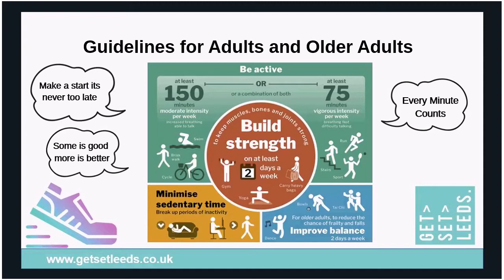The most commonly used infographic to explain the guidelines for adults and older adults shows 150 minutes of moderate intensity or 75 minutes of vigorous intensity activity over the course of seven days. That can be quite a lot to take in at once, so we'll break it down step by step — starting with what moderate and vigorous intensity actually mean.